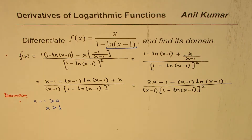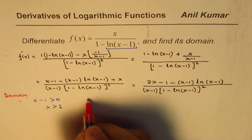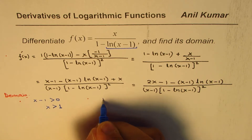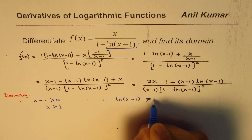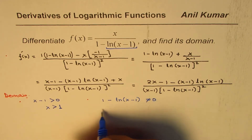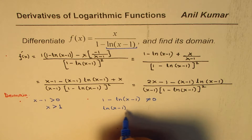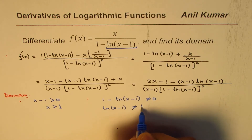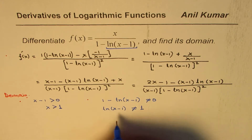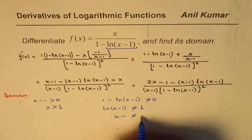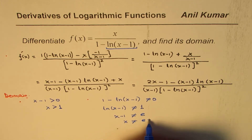The denominator cannot be 0 — that's the other restriction. For that, we solve: (1 minus ln(x minus 1)) should not be equal to 0, or ln(x minus 1) should not be equal to 1. Now, ln of anything equals 1 if it is e, that is to say x minus 1 should not be equal to e, or x should not be equal to e plus 1.